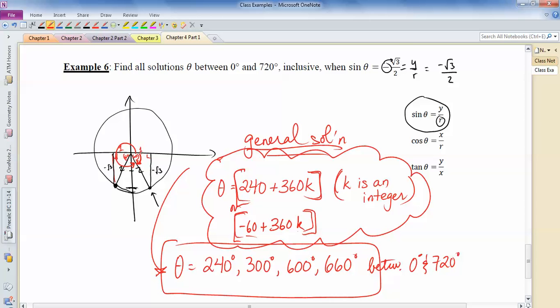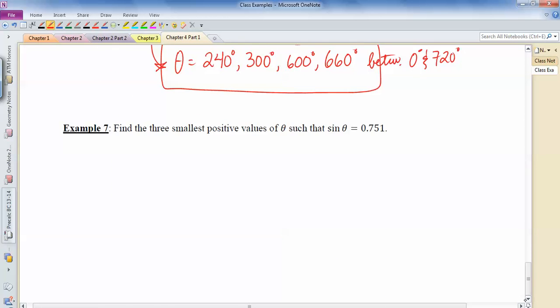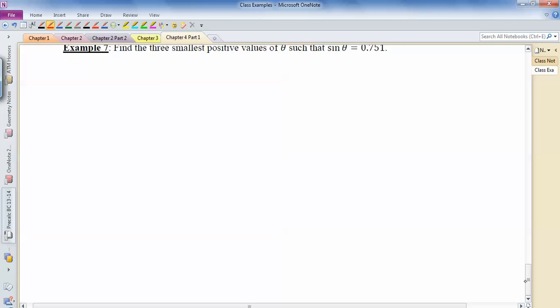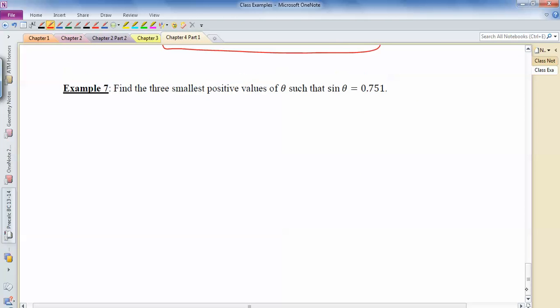Okay, let's look at number 7. 7 is kind of related. So 7 says, find the three smallest positive values of theta such that sine theta is 0.751. So we can think of this as 0.751 over 1. And then using that definition, it's y over r. So in this case, r is 1.